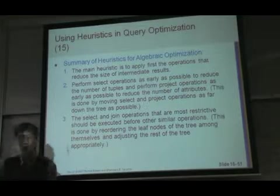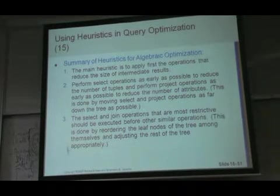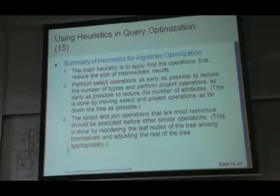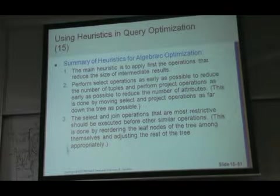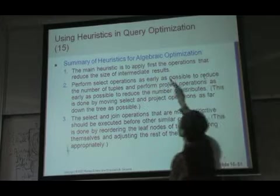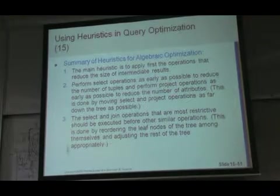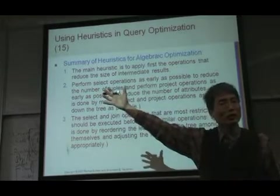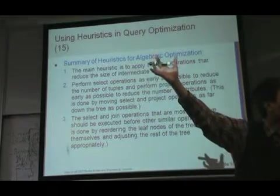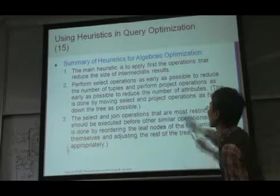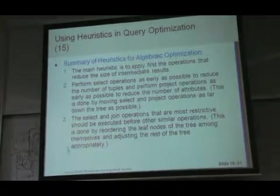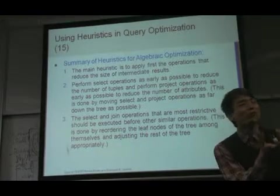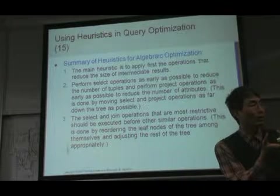So this is a summary of the heuristic optimization. The idea is the same as the one I explained. Apply the operation that can minimize the operation. First one is the main heuristic is to apply the first operation that reduces the size of the result. That makes sense. And perform the first operation as early as possible. You don't have to keep until the last of the operation which is never been used. Instead, first apply the selection operation. Select and join operation that are most restrictive, which means that produce minimum result. That will be right.